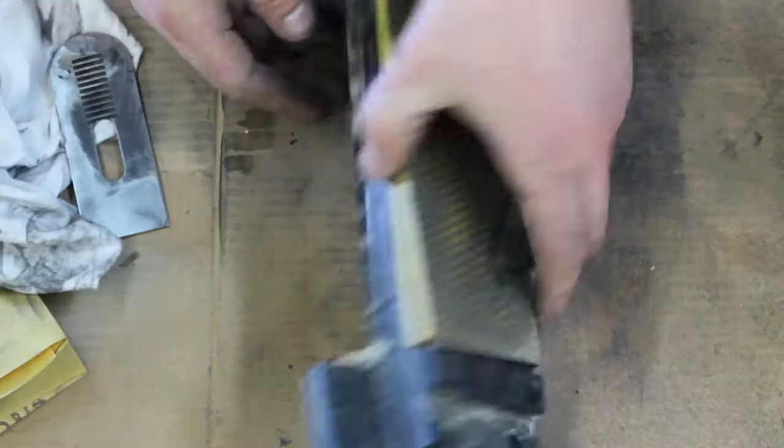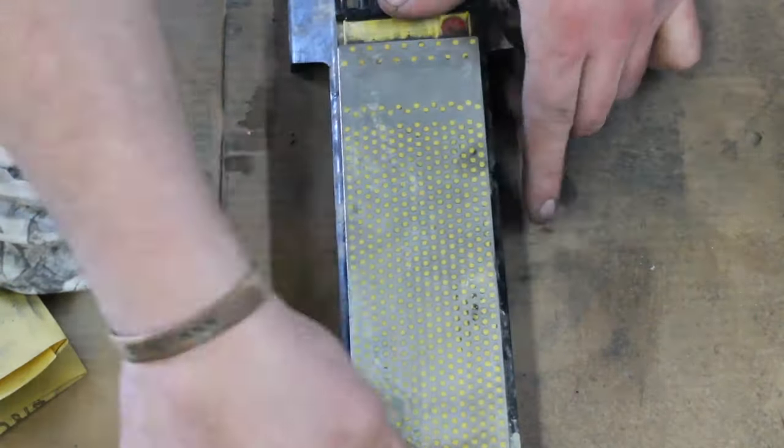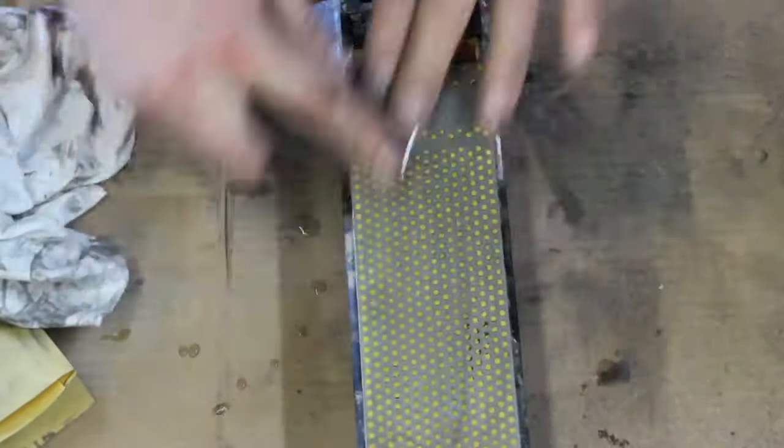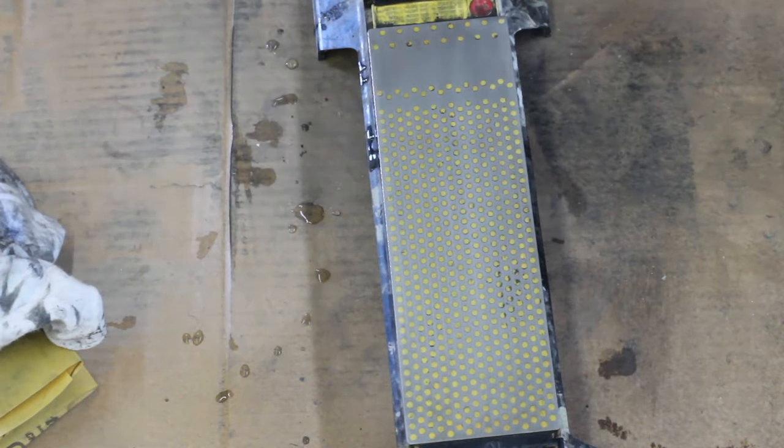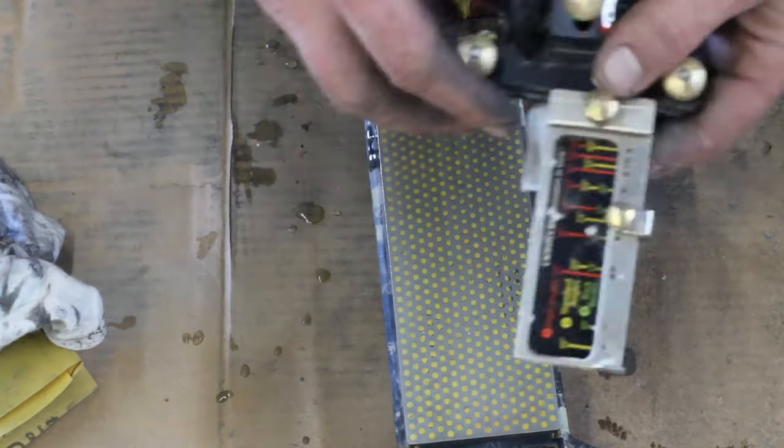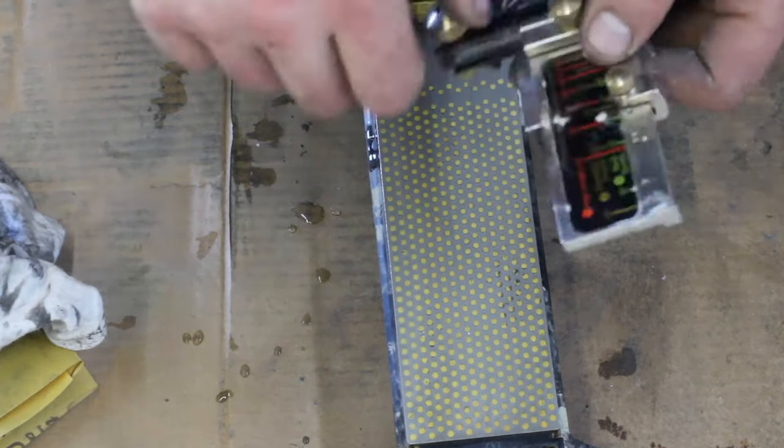So back to flattening the bottom, which is extremely important when you're sharpening any blade. I went from the coarse to the fine sides of the diamond plate and then I'll move on to some water stones. It's just moving it back and forth and getting that to become nice and shiny.